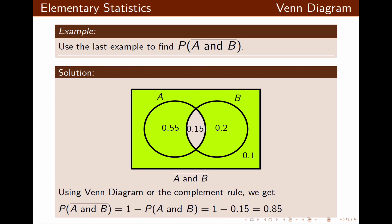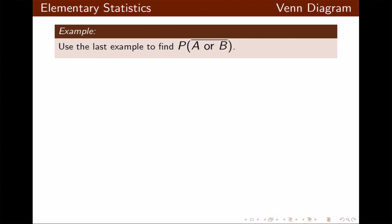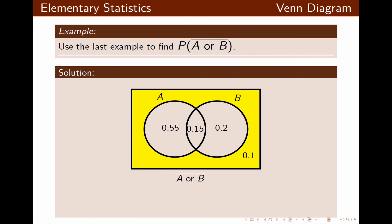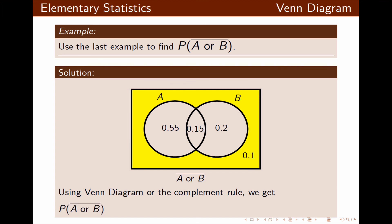If you add the probabilities in the shaded region you should also get 0.85. Now in this example we find the probability of not A or B, which means being outside of the circles — the answer is 0.10. Using the complement rule: probability of not A or B equals 1 minus probability of A or B. Adding the probabilities inside the circles and subtracting from 1, we get 0.10 as expected.